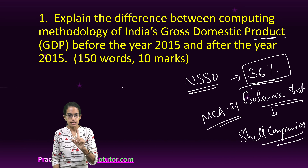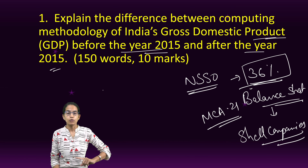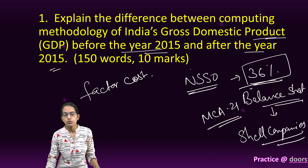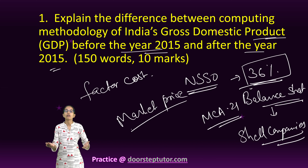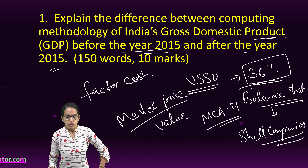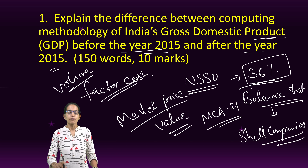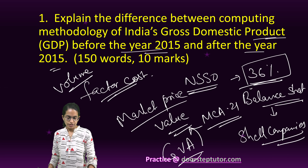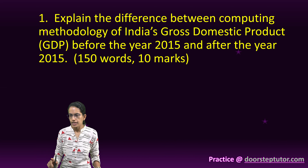Another important difference before and after 2015 is the calculation method. Before 2015, it was at factor cost; after 2015, it is at market price. Factor cost includes the cost of production — inputs like land, labour, and capital. Market price includes the final value. So before 2015, we were focusing on volume of production; after 2015, we focus on gross value added, or the value of production.